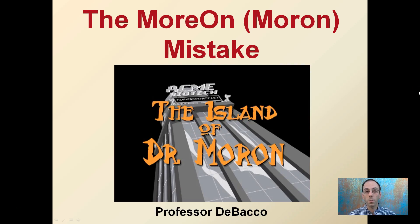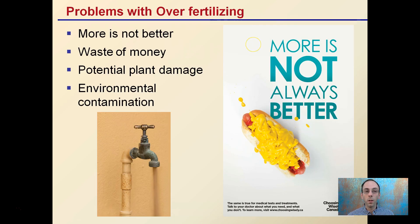This can be a problem that a lot of growers may not want to admit to. It's called the 'more on' mistake — the approach to gardening and growing crops where you're simply over-adding or just adding more nutrients, thinking that's going to fix your problem. The problem with over-fertilizing is that more is not always better. It can be a waste of money, can potentially damage your plants, and can also increase the odds for environmental contamination.